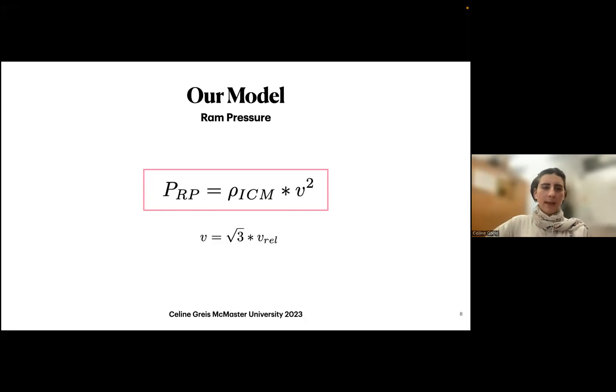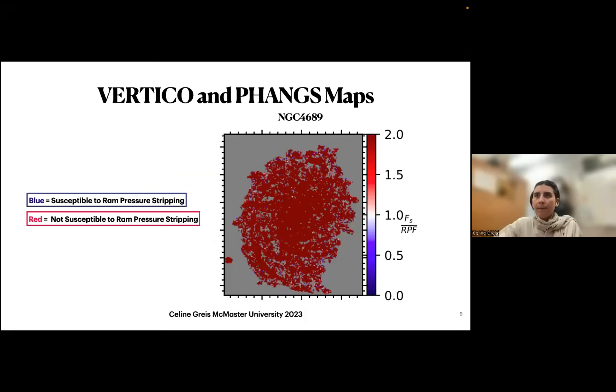We calculate the ram pressure for the whole galaxy, it's the same for the whole galaxy. Then we use the molecular gas data from FANGS, so we have the restoring pressure at every point of a galaxy. Here's an example how this can look like. You see in this galaxy, NGC 4689, we divided the restoring pressure by the ram pressure. Whenever you see something red, that means the gas is not susceptible to ram pressure stripping, and whenever it's blue, it is. I just want to make this clear: blue, susceptible, red, not. This galaxy looks a bit boring, and there's not much happening in terms of ram pressure.